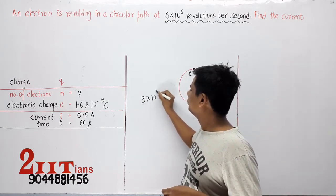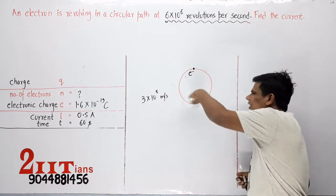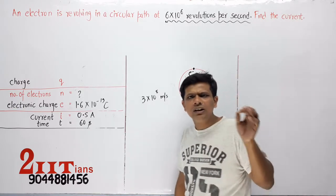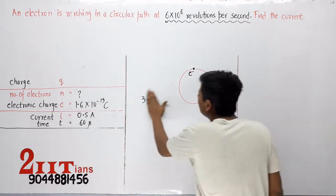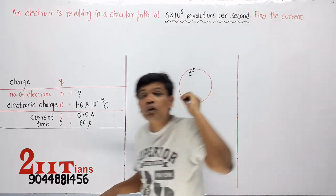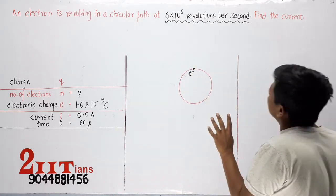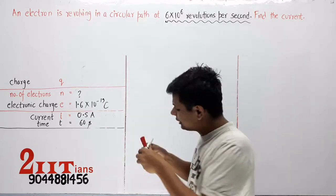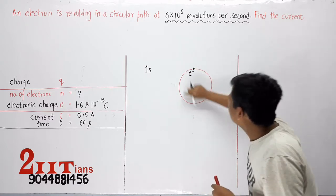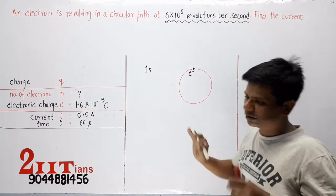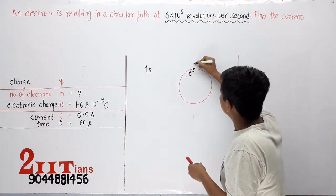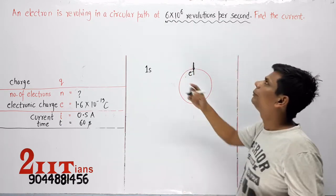Speed of light होती है 3 × 10⁸ meter per second, और यह circuit तो यार एक meter से काफी छोटा होगा। अगर हम एक second का video बनाएं और camera लगाकर देखें कि एक second में यह कितने बार चक्कर लगा रहा है, तो 6 × 10⁶ बार आएगा।